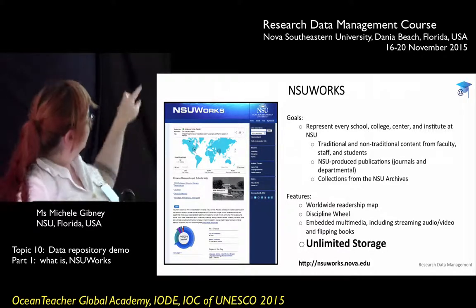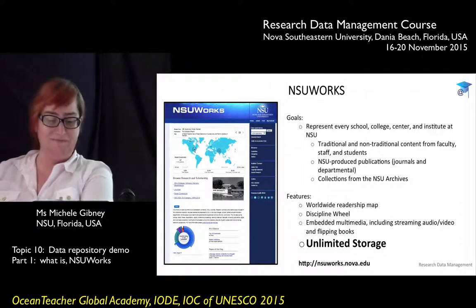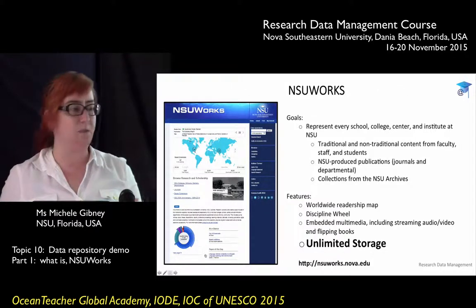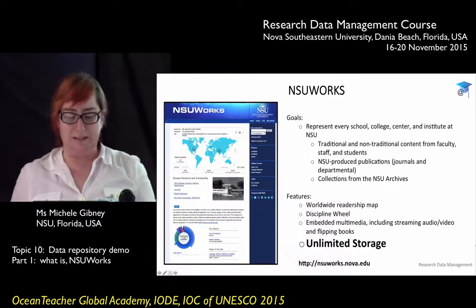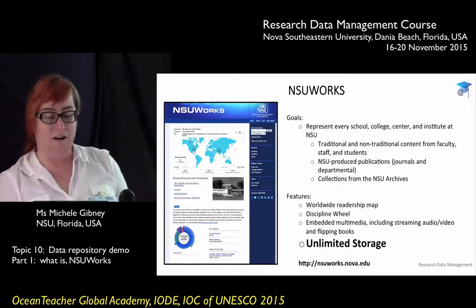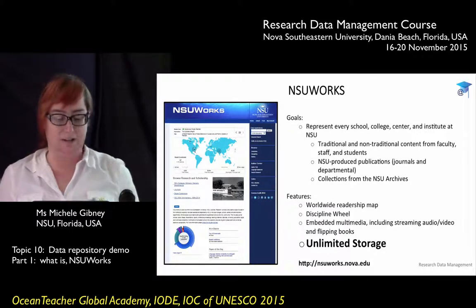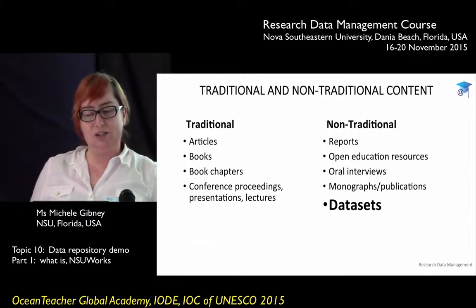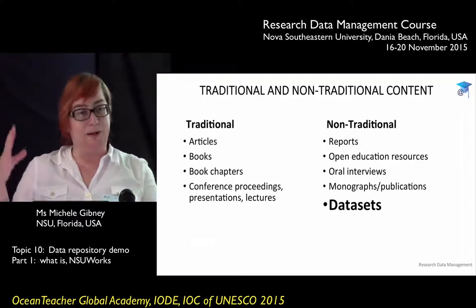There's also a colorful wheel at the bottom which shows the type of scholarship — each color represents a different academic discipline. As a snapshot of what we have, there are currently 12,300 items in NSU Works, and we average 1,500 downloads a day. It'll be two years old in February, so it's very robust — we've been adding a lot of stuff.